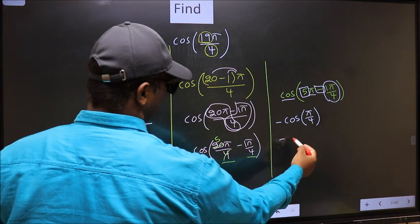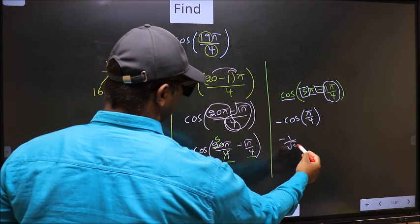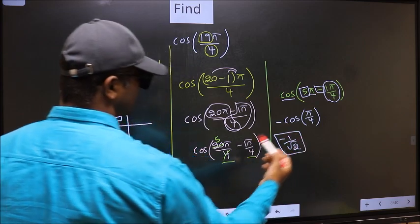So negative cos(π/4) is 1 by root 2. This is our answer.